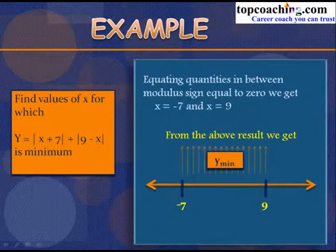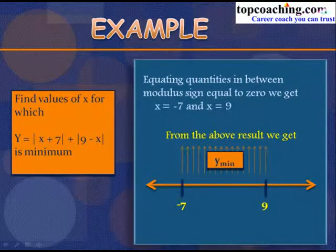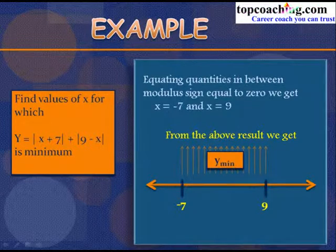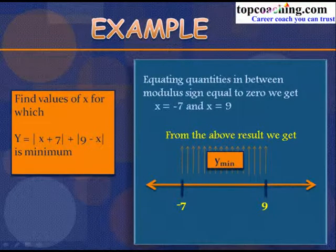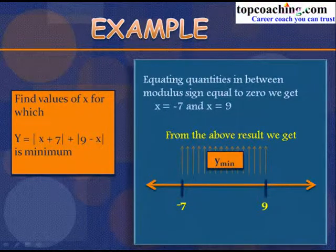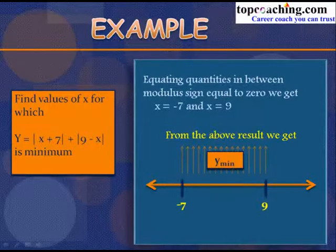At x = 2: y = 9 + 7 = 16. So for all values of x between −7 and 9, y equals 16, which is constant throughout. This value of 16 is the minimum value of y.